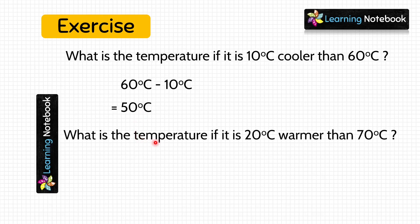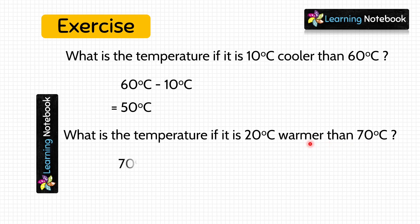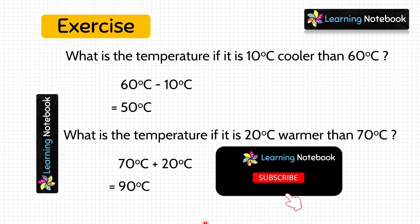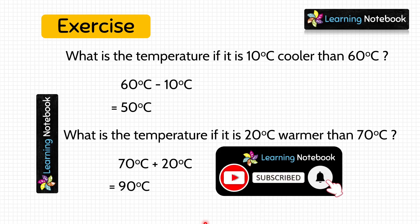The next question is: what is the temperature if it is 20 degree Celsius warmer than 70 degree Celsius? 'Warmer' means more temperature, so we will do 70 degree Celsius plus 20 degree Celsius. 70 plus 20 equals 90, so the answer is 90 degree Celsius.